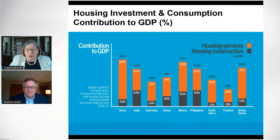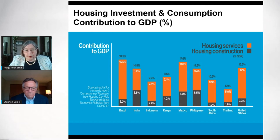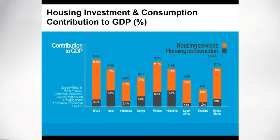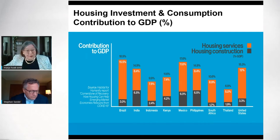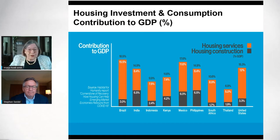Here in this slide, the orange bar shows the consumption part — the services that the stock is contributing to GDP in the different countries — and the gray part of the bars shows the investment in new construction. You can see how large the consumption part of housing's contribution to GDP is. Moreover, if you invest now in new housing, that consumption stays and generates income for 20, 30 years. So that's very important, and it is often not measured in emerging markets.